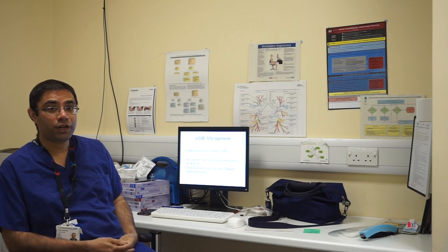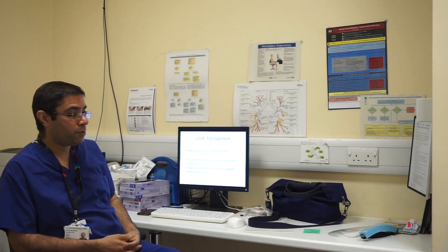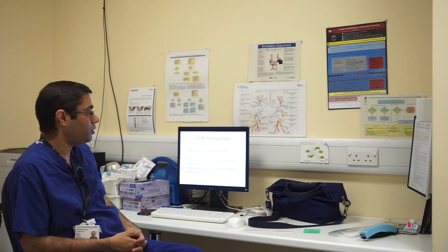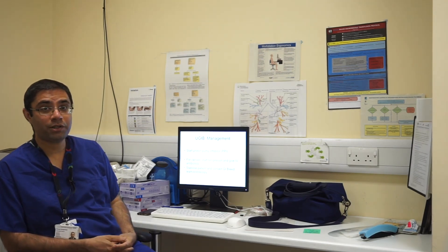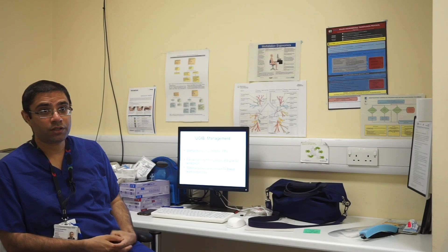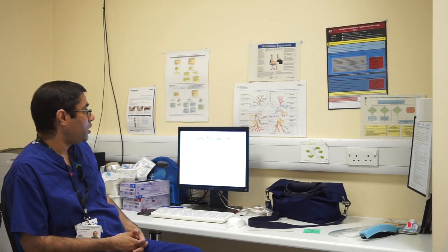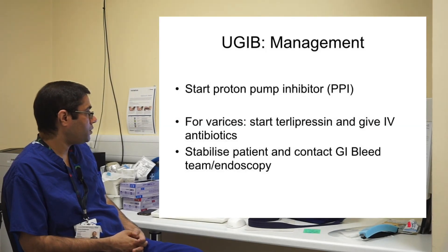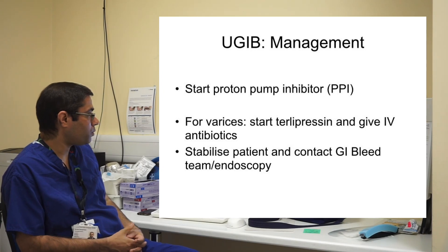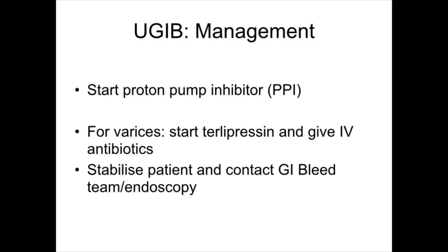By this stage you should be able to predict whether the patient has an upper GI bleed due to peptic ulcer disease, liver disease, over-anticoagulation, post-surgical, or post-intervention causes. It is initially recommended to start patients on intravenous proton pump inhibitor and keep the patient nil by mouth. For varices, you can start patients on terlipressin after adequate fluid resuscitation and give IV antibiotics.